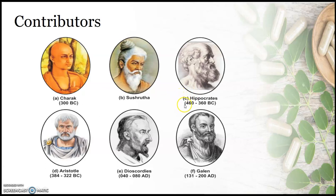Hippocrates, working in European countries between 460 to 360 BC, was a physician who compiled drugs and is known as the father of medicine. Aristotle did enormous work in animal drugs, with a period of 384 to 322 BC. Dioscorides compiled medicinal plants and wrote the book De Materia Medica. Galen is known as the first pharmacist of the world, as he explained different extraction procedures and preparations of medicinal products in concentrate form.